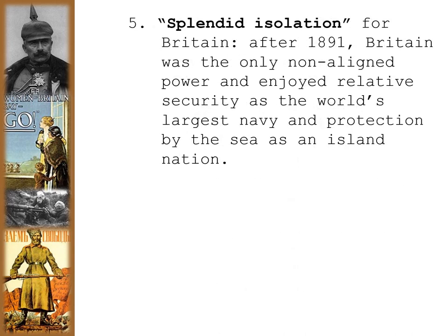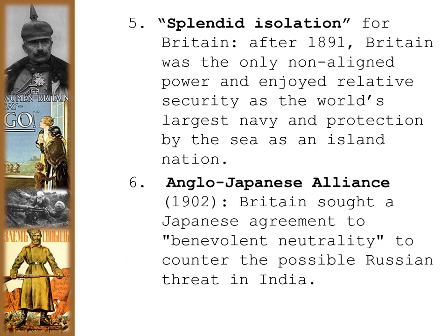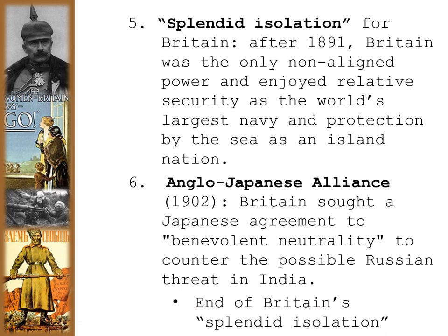After 1891, Britain was the only non-aligned power in Europe and enjoyed relative security as the world's largest navy protected it as an island nation — a period known as splendid isolation. That came to an end with the Anglo-Japanese Alliance in 1902, where Britain sought a Japanese agreement for benevolent neutrality to counter the possible Russian threat in India. This would be the end of Britain's splendid isolation.